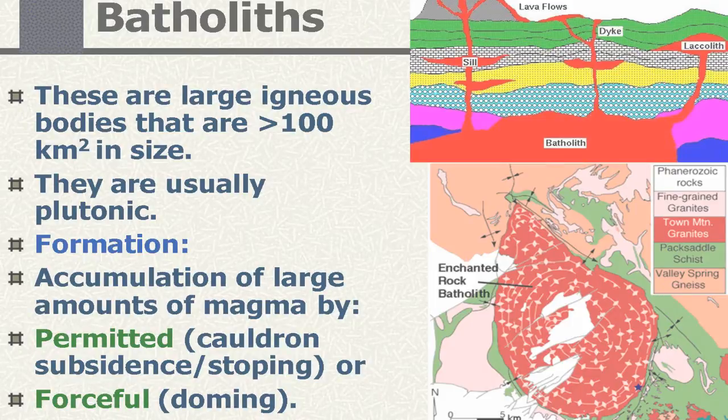According to the Encyclopedia Britannica, a batholith is a large body of igneous rock formed beneath the earth's surface by the intrusion and solidification of magma, with a surface exposure of over 100 square miles. Faulting and contact metamorphosis of the enveloping rock near the batholith are also common.